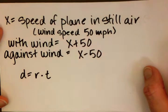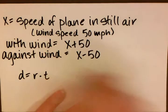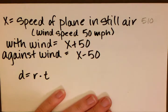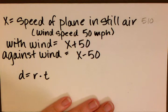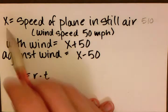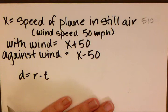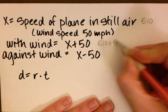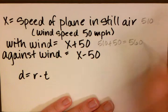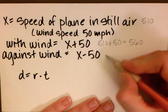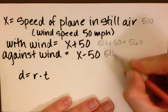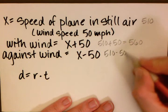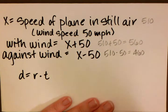So x equals 510, which is the speed of the plane in still air. Remember the wind speed is 50 miles per hour, so the speed with the wind is 510 plus 50 equals 560. Against the wind, 510 minus 50 gives us 460.